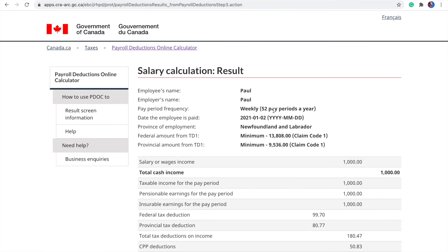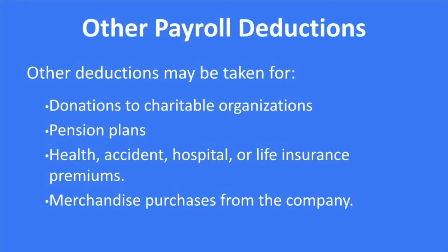Depending on the contracts you have with employees, there could be other deductions, such as donations for charitable organizations, private pension plans, health and accident insurance, and merchandise purchased from the company.